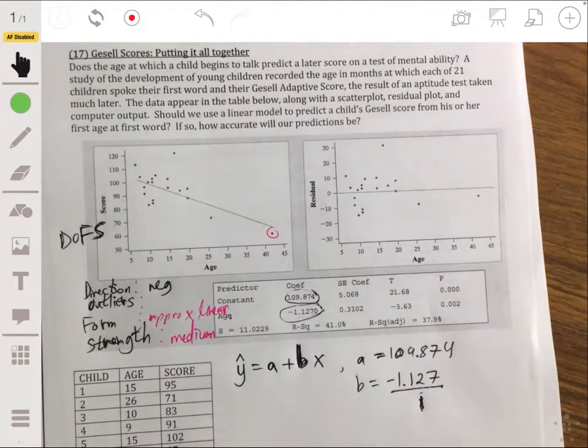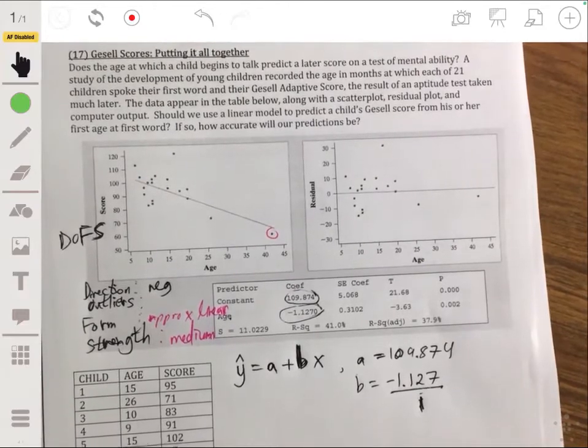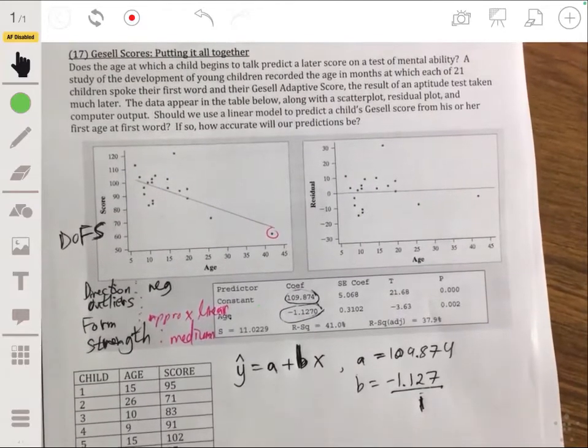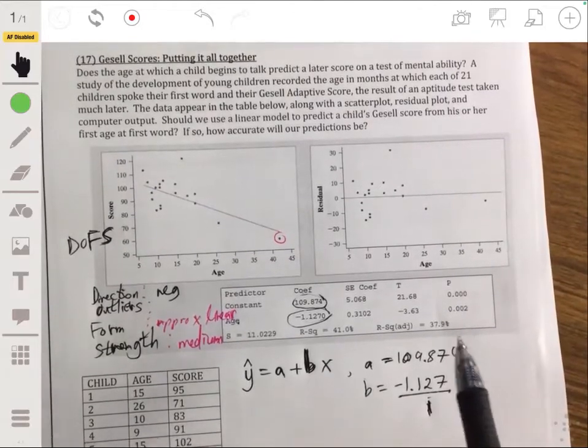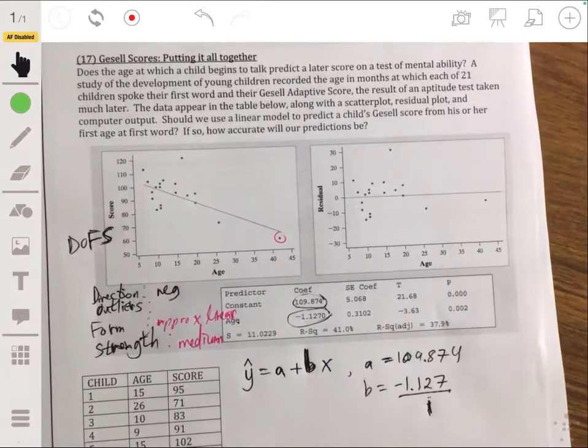The y-intercept is where would the line intersect the y-axis when x is zero or when the age is zero. So when the age is zero, this is saying that we would predict the score to be about 109.874. Now would that make sense in real life? Well, it can't because you can't be age zero. If you're age zero, you're not going to be able to take a test. So this wouldn't make sense in real life. So always make sure to keep that in mind because don't just think of it as just a number. We have to make sure if the number makes sense in the problem.